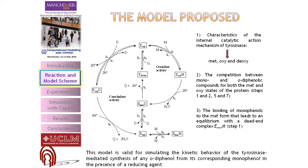This is the model we proposed. It is based on monophenol and the main characteristic is the internal catalytic action of tyrosinase. Tyrosinase can be in three forms: met, oxy, and deoxy. The second step is the competition between the monophenol and diphenol, which we can see in steps one, two, five, and seven. This model is valid for any o-diphenol reaction using tyrosinase.